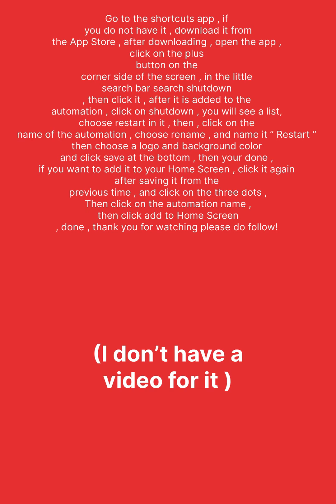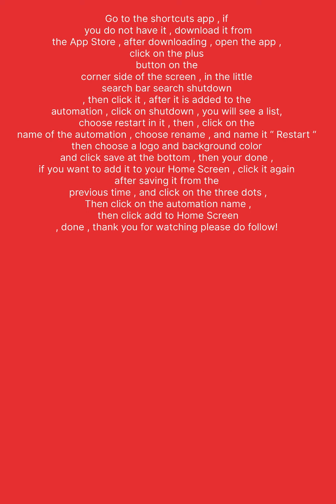Then you're done. If you want to add it to your home screen, click it again after saving, then click on the three dots. Then click on the automation name, then click 'Add to Home Screen'. Done.